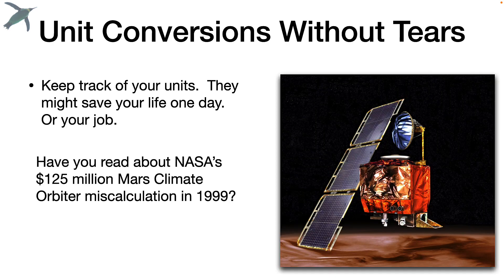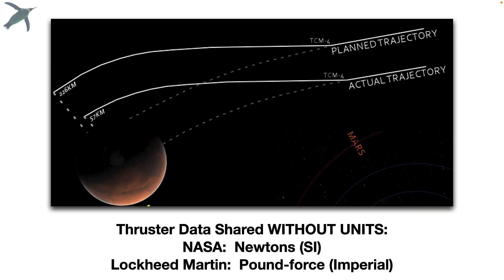Have you read about NASA's Mars Climate Orbiter miscalculation from 1999? NASA was using Newtons and Lockheed Martin was giving them pound force. Just keep track of your units.